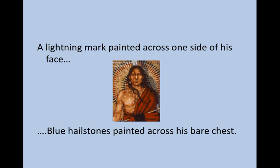Long before Sigmund Freud wrote The Interpretation of Dreams, the Lakota, as well as other native peoples, were active dream interpreters and gave great credence to the prescience of the dream world, to the foretelling of dreams. Based on his dream, Crazy Horse would appear in all subsequent battles with the Bluecoats with a lightning bolt painted across the length of his face, symbolizing the status he would take on as a thunder dreamer. He painted blue hailstones across his chest, wore a single red-tailed hawk feather in his hair, and tied a stone behind one of his ears as a talisman of good fortune to help him emerge from battles unhurt.